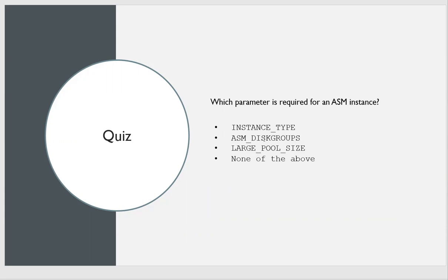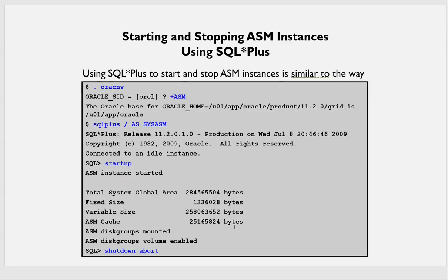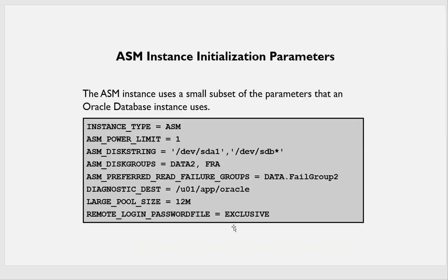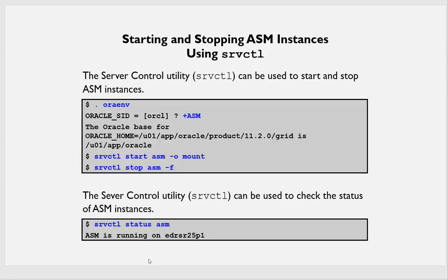Quiz time: which parameters are required for the ASM instance? Instance type, ASM disk groups, large pool size, or none of the above? The answer is you need all of these — instance type, ASM disk group, and large pool size. These are mandatory and much needed; without them, your ASM will not start.